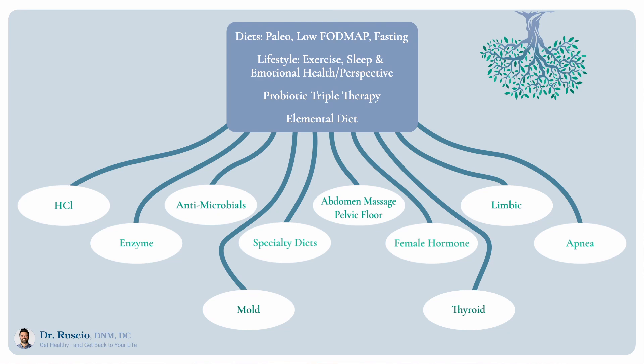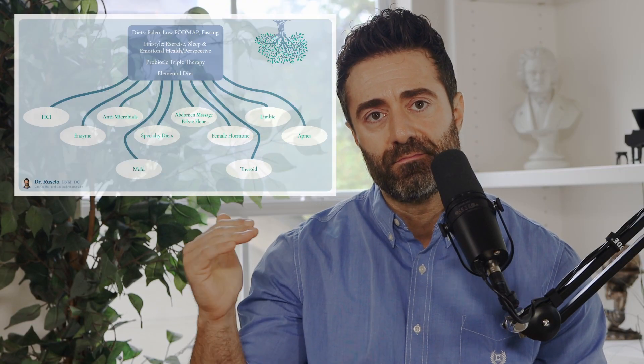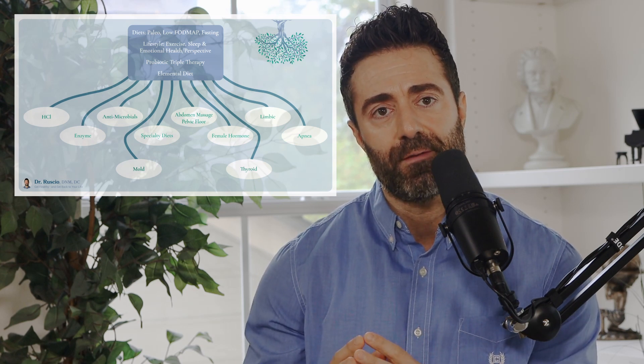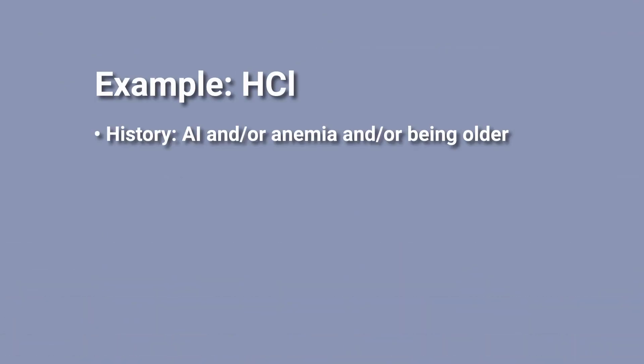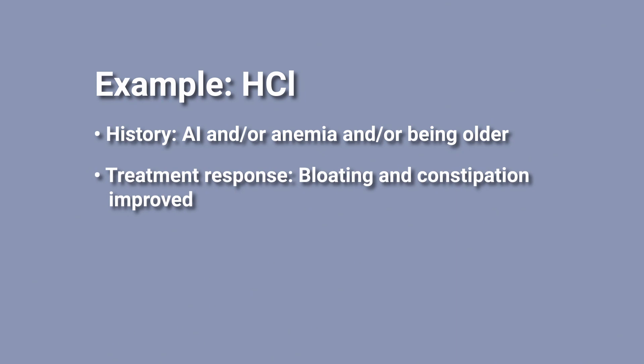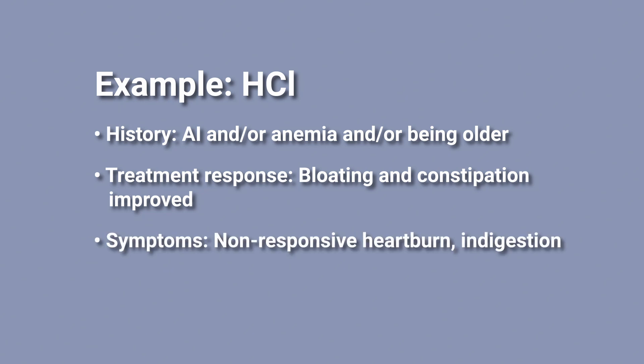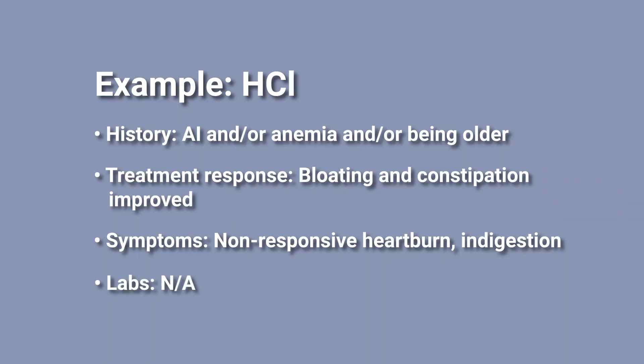Outlining a few examples: as you start working through the trunk, your clinician will attentively look at how your symptoms evolve in juxtaposition to your information, your symptoms, and your history. Let's take hydrochloric acid as one example. If you have a history of autoimmune conditions and anemia and you're older, these are all historical factors that put you at increased risk of low HCL and therefore benefiting from HCL supplementation. And if you've had the treatment response of elimination of bloating and constipation but are still having non-responsive symptoms of heartburn and indigestion, this would make you a real candidate for HCL — it would really strengthen the rationale. By the way, there's not really a good lab marker for HCL.